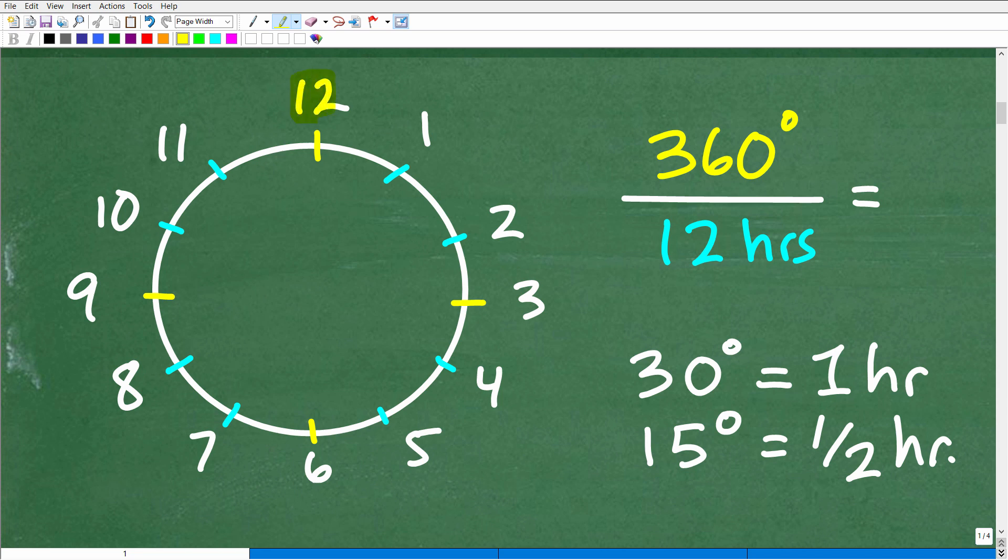Right here, we got 12 up here, right? Then 1, 2, 3, 4, 5, 6, 7, 8, 9, 10, 11. So, you have to have some basic understanding of a clock face.